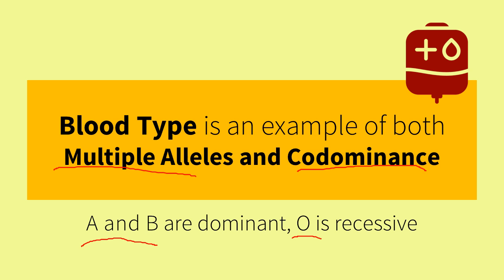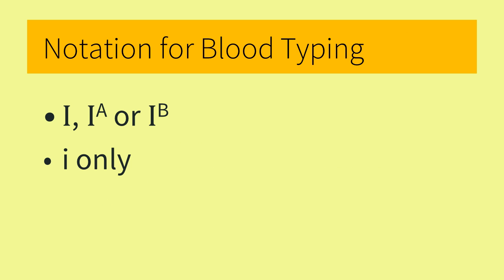Codominance means that both alleles will be expressed when they occur together. In the conventional notation for dominant and recessive alleles, we use the capital for the dominant and the lowercase for the recessive allele. We use the letter I for blood types, which stands for isoalleles. Since there are two dominant alleles for blood type, we will use A and B as superscripts on the I. Since there is only one recessive allele, there will not be a superscript on the lowercase i.